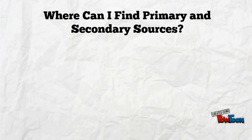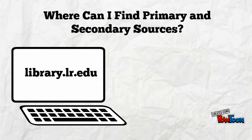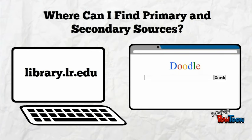Primary and secondary source material is available through the library databases as well as from reputable sites on the internet. Our Canvas course site contains a list of sites where you can discover primary sources and suggestions for searching databases in the library catalog.